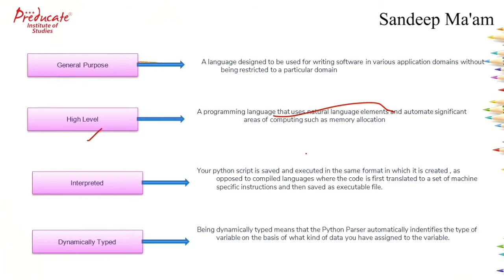The next one is interpreted. Interpreted means whatever script we have written in a particular format, it executes in that same format. Whereas in compiled languages, the entire code is converted to machine language first, and then that file is executed. But in Python, the file executes directly in the same format.